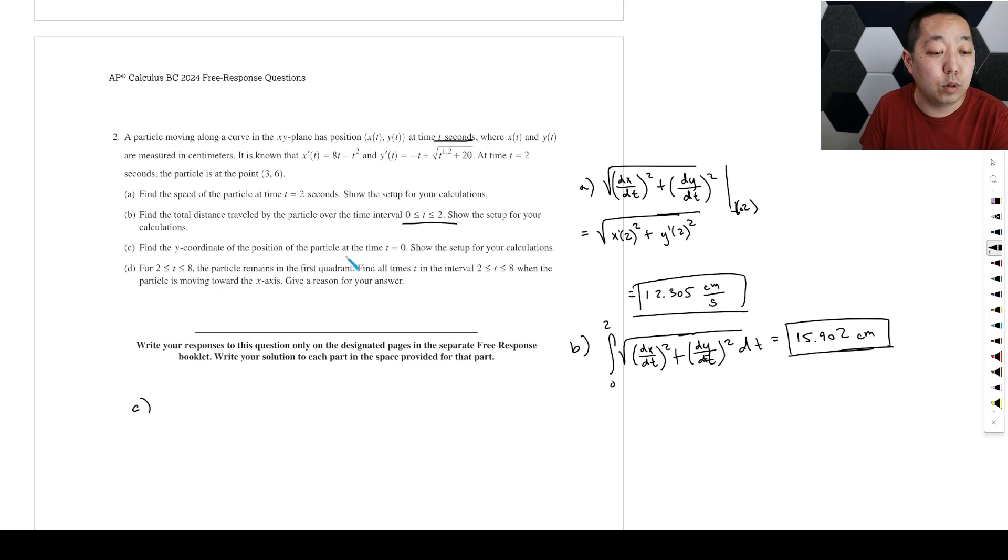Find the y coordinate of the position of the particle at time t equals zero. So again, if you have the derivative of y, this is a fundamental theorem of calculus. If you integrate that derivative, that's going to be y of b minus y of a. Now I want the position at t equals zero and I know the position at t equals two. So I'm going to integrate this from zero to two. And that will give me y of two minus y of zero. This is the y position, I want to know this guy. What is y of two? At time t equal two, it's located here.